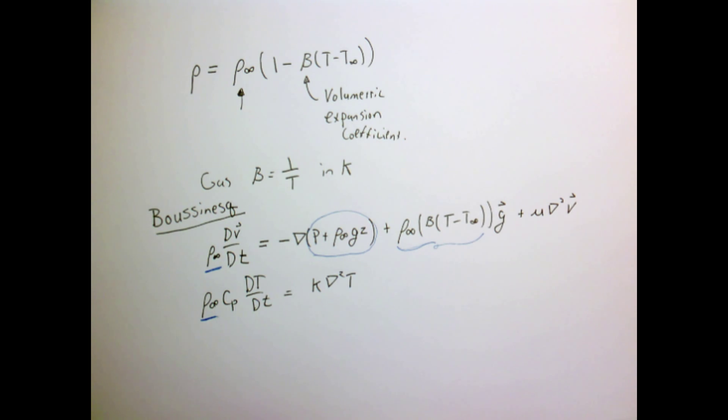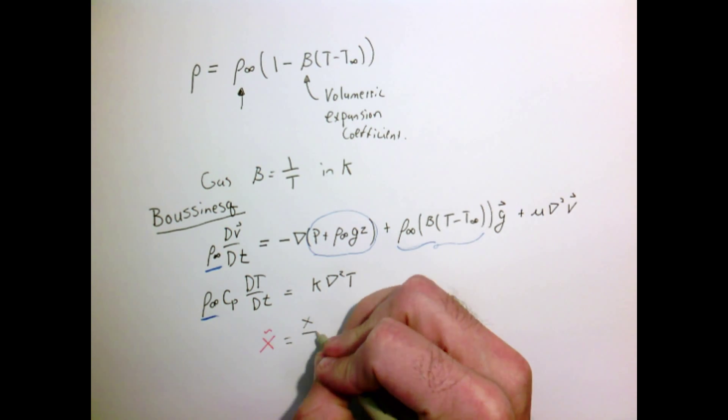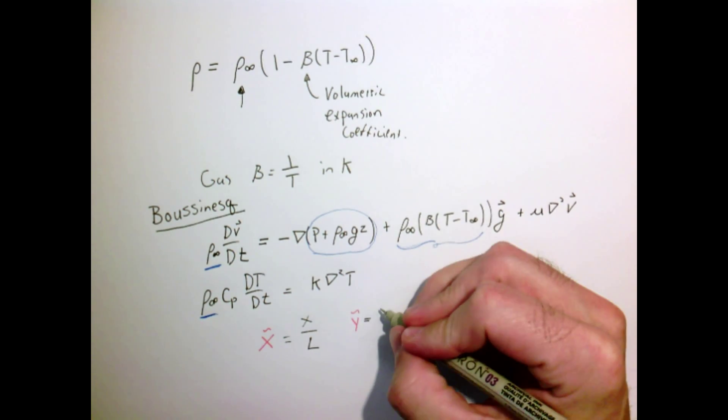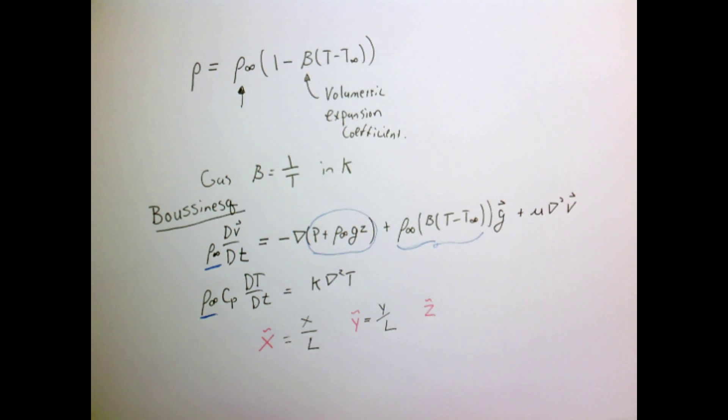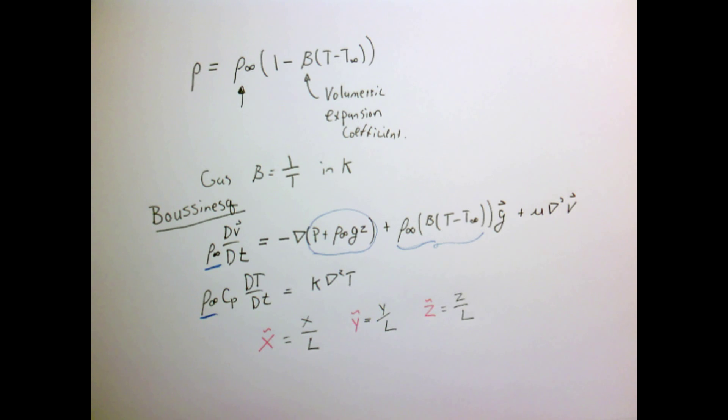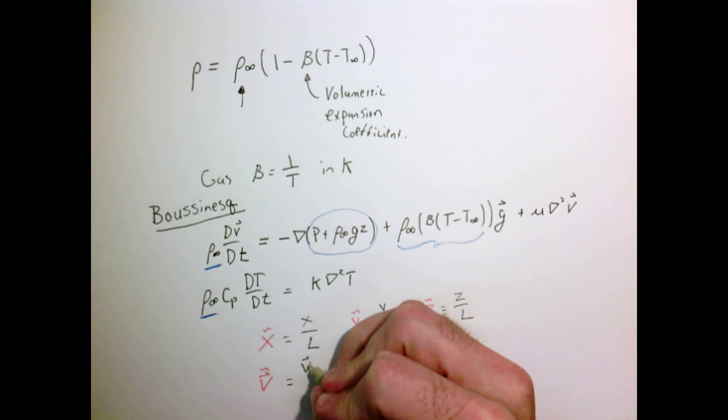We're going to proceed with our dimensional analysis now, exactly as we did in the previous example on forced convection. I'm going to define a set of dimensionless variables, such as my coordinate divided by some length scale L. My dimensionless y and z variables will also be scaled by L. We're going to use all the same scalings that we did before. You can look back at the forced convection video where we did this more slowly.